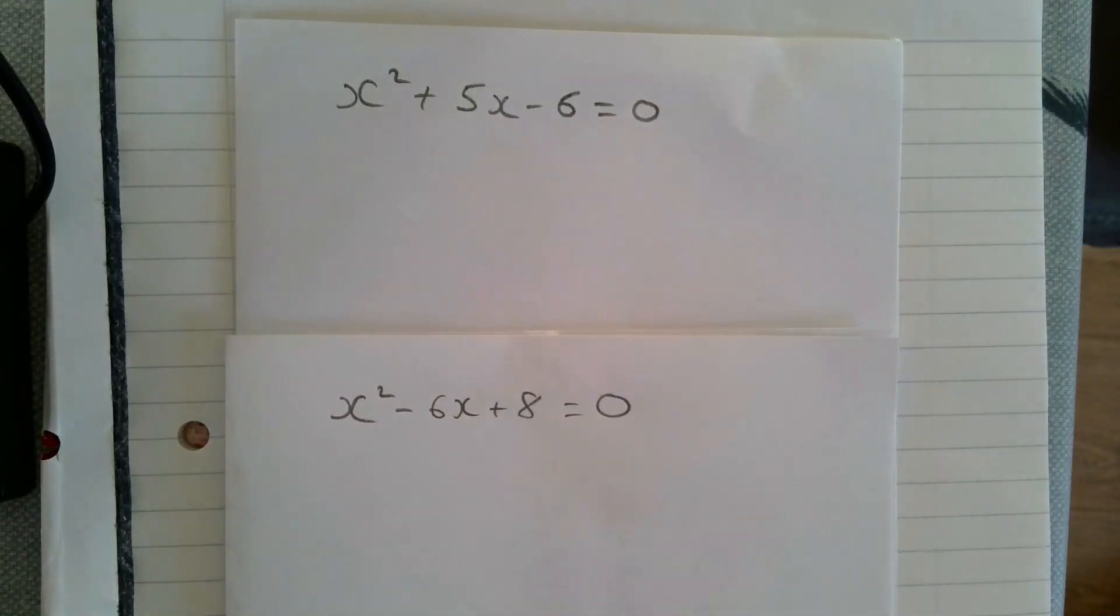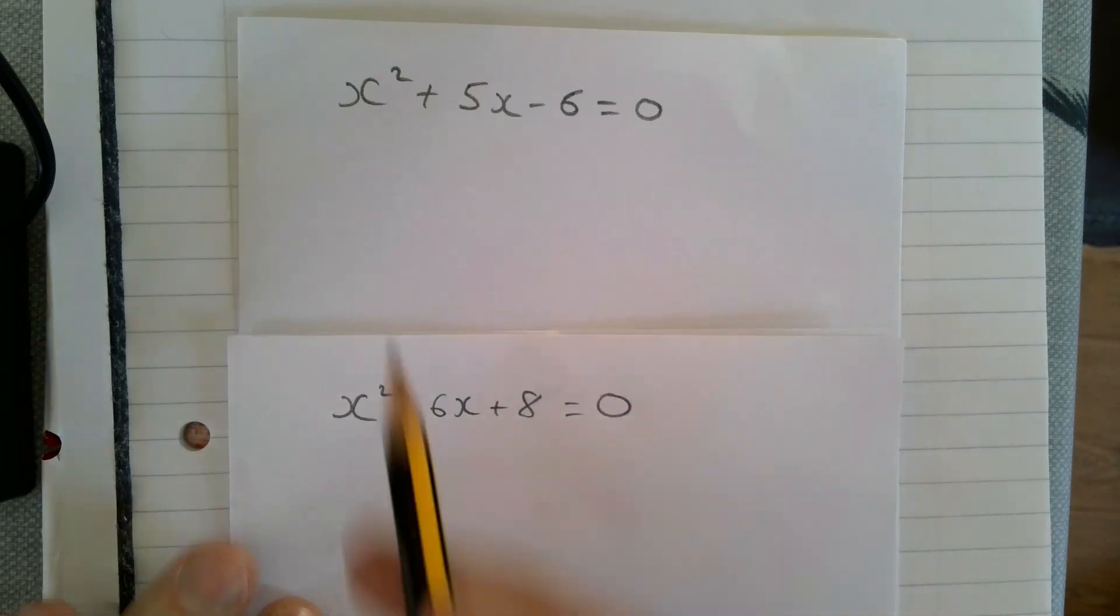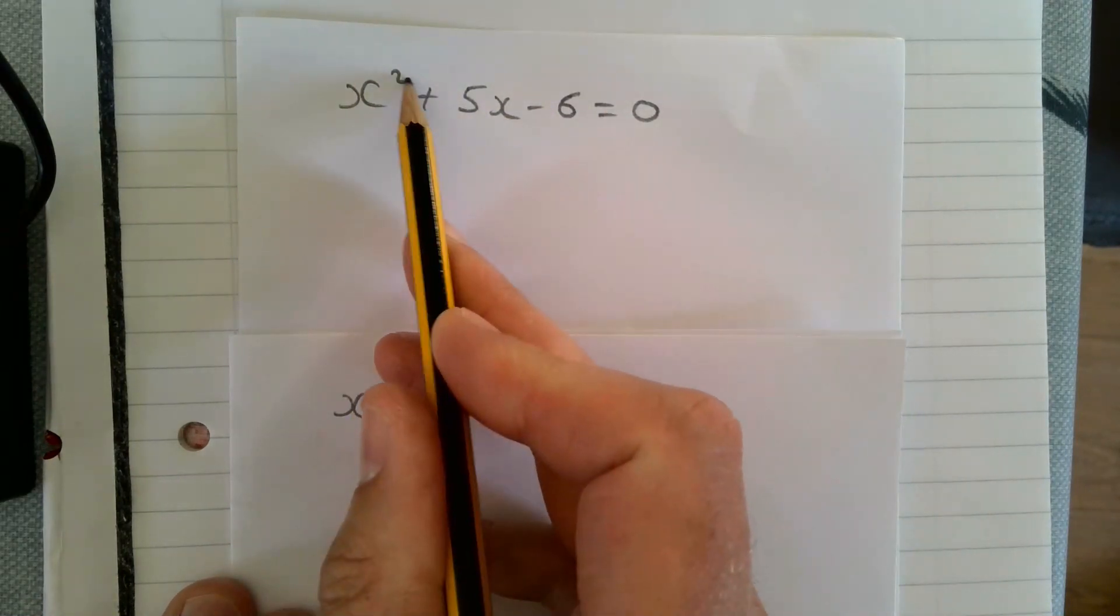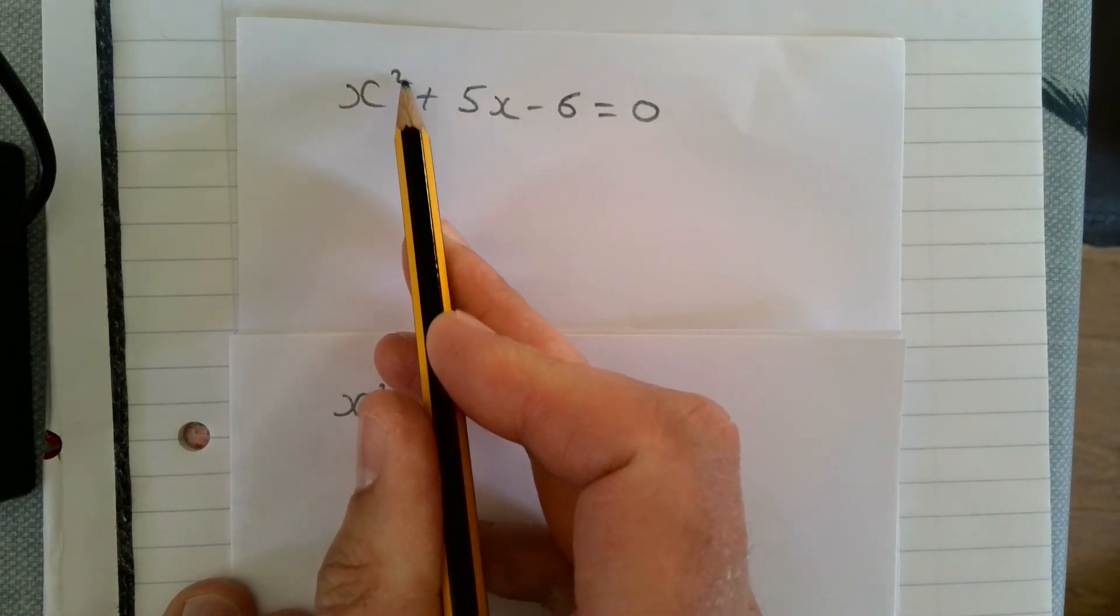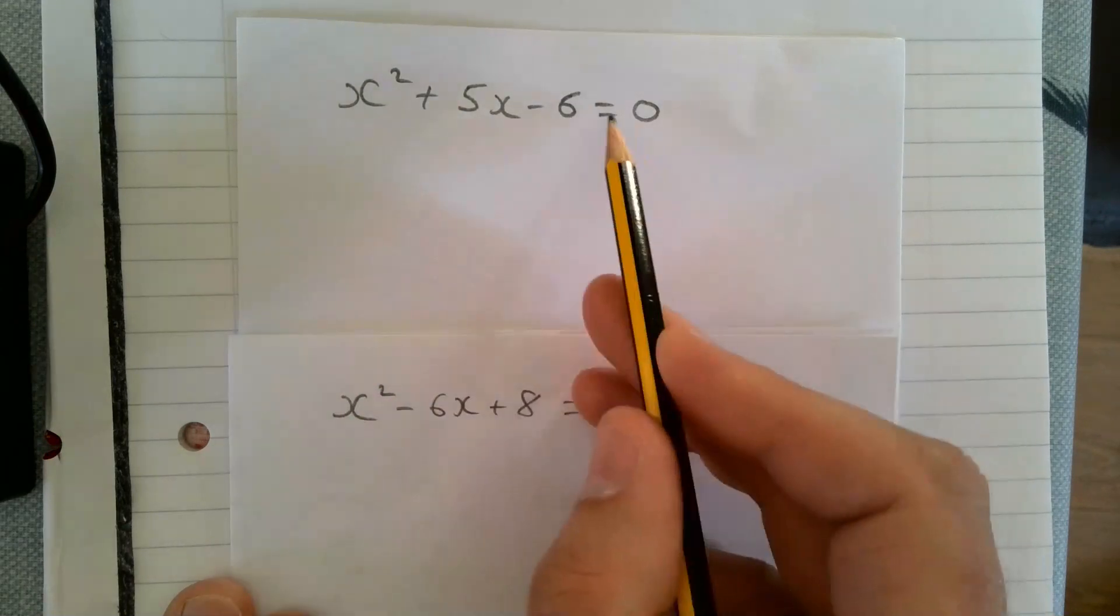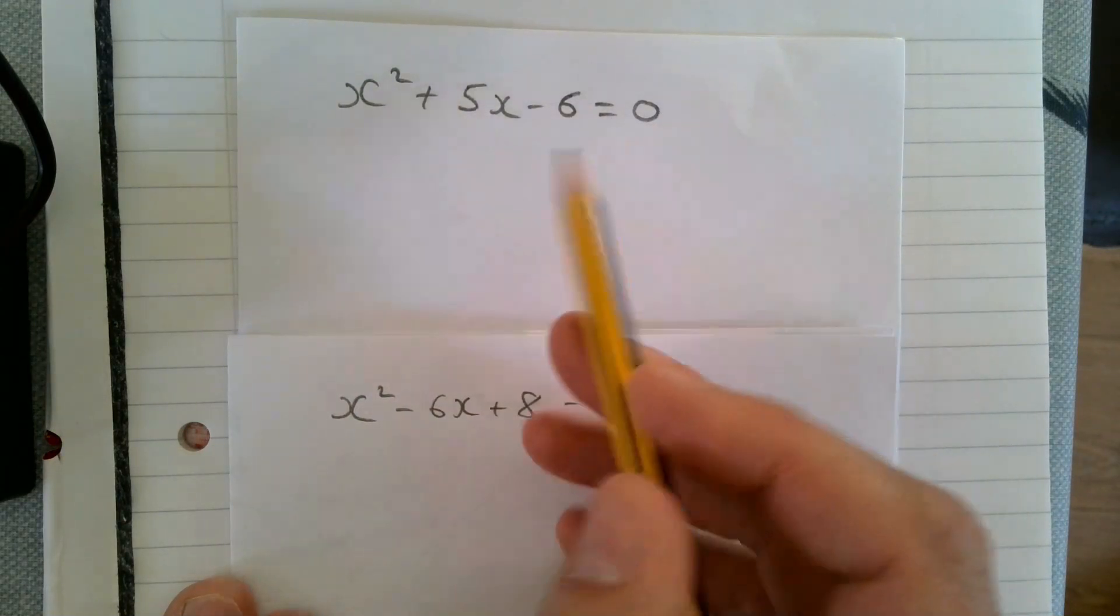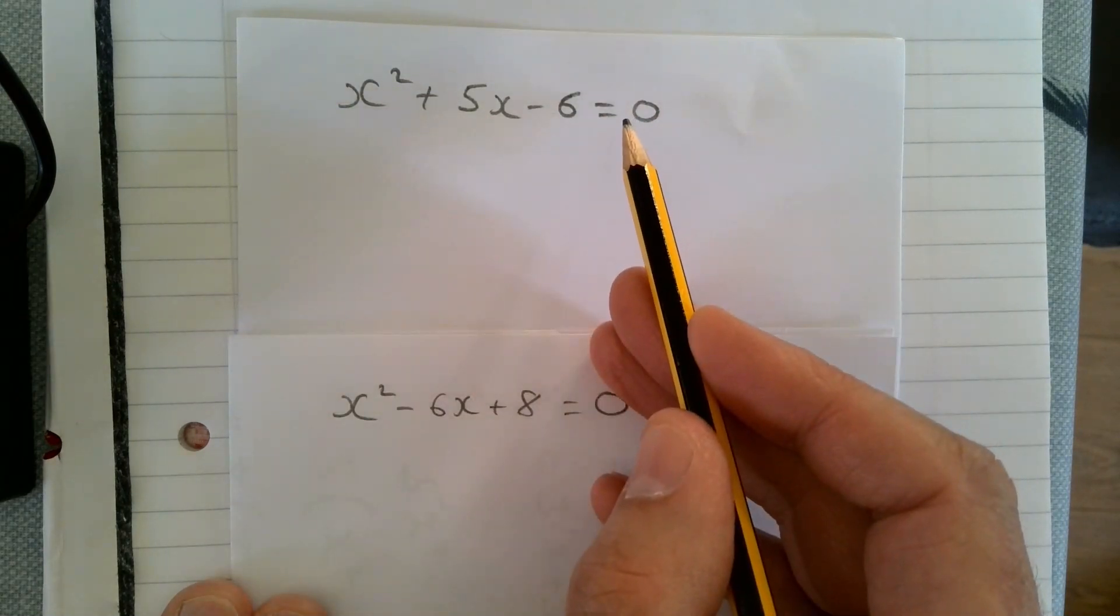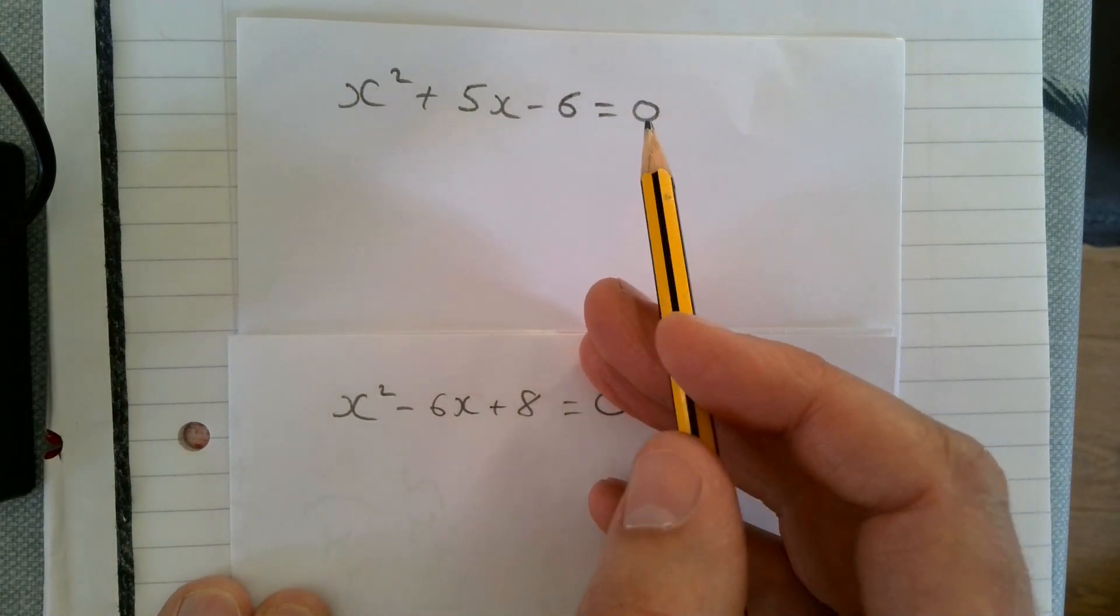This is a video on solving quadratic equations by factorizing. This is a quadratic equation—we know it's quadratic because there's a squared term. It's an equation because there's an equal sign. We're trying to find numbers for x that make this equation work. There are different ways of doing it; we're going to do it by factorizing.